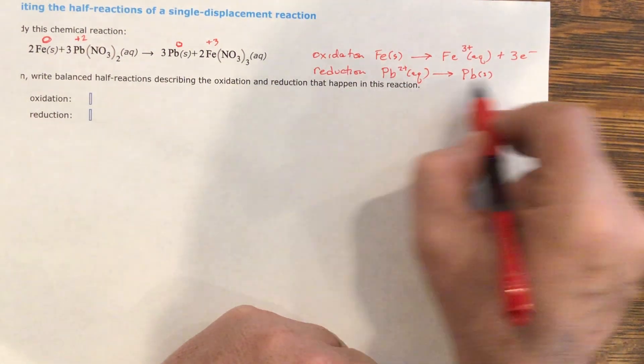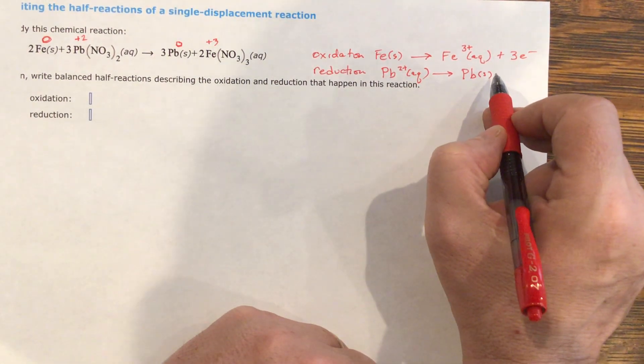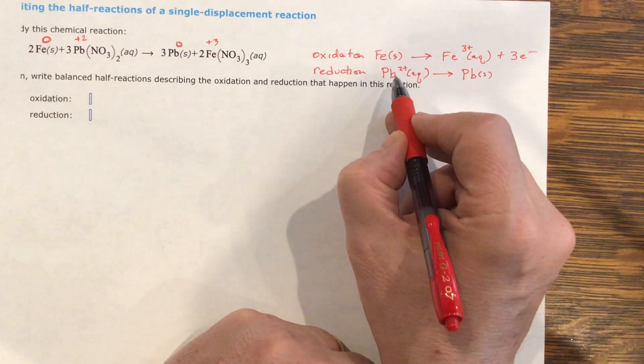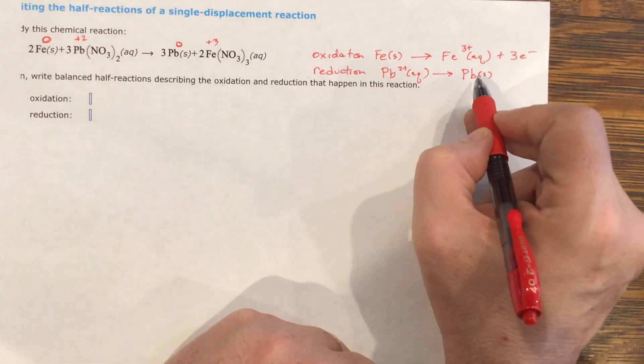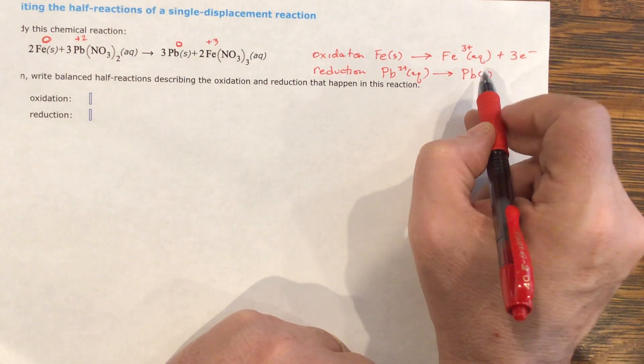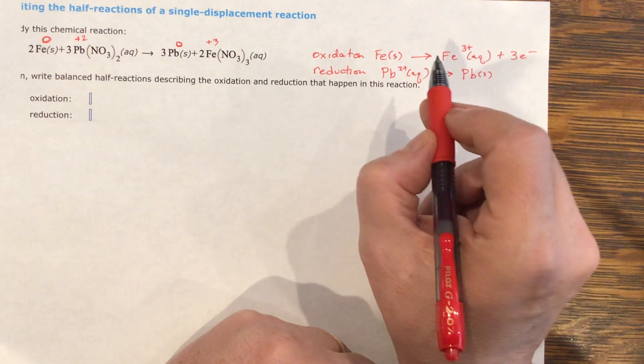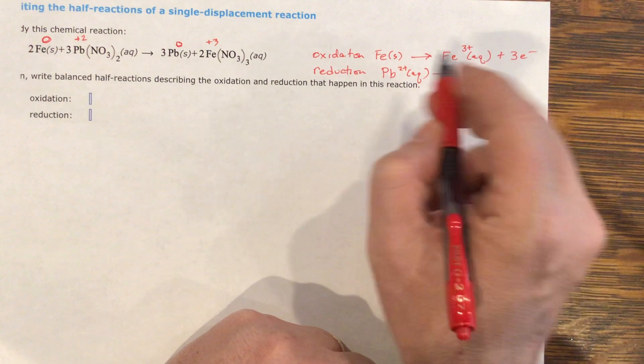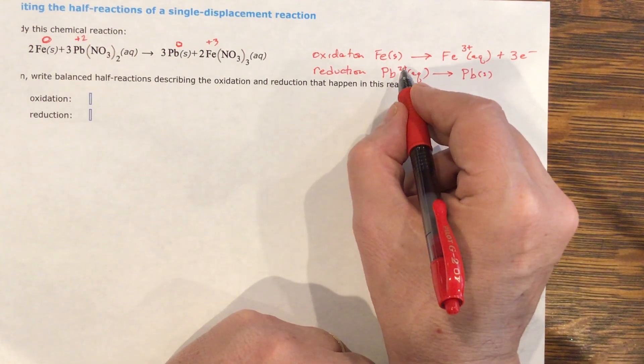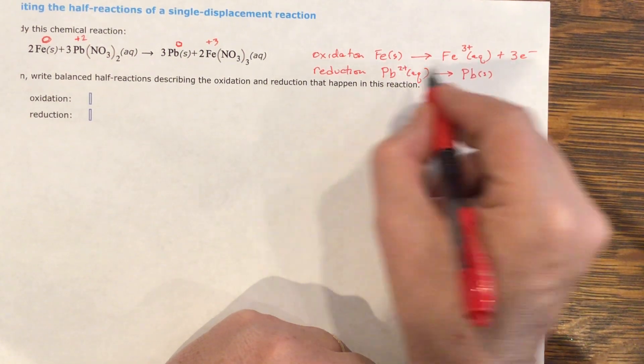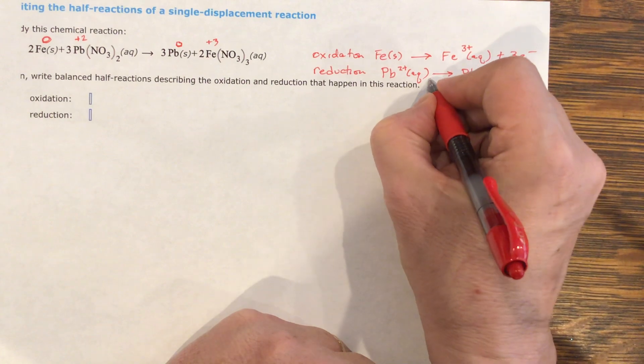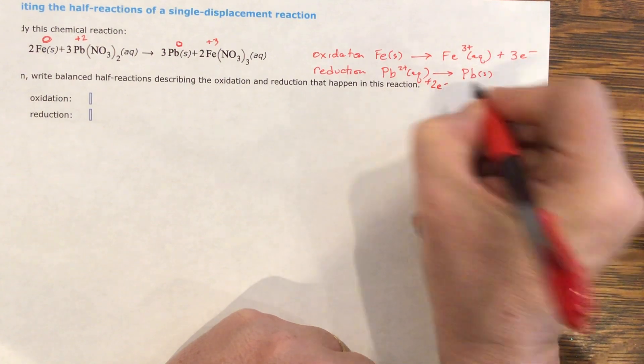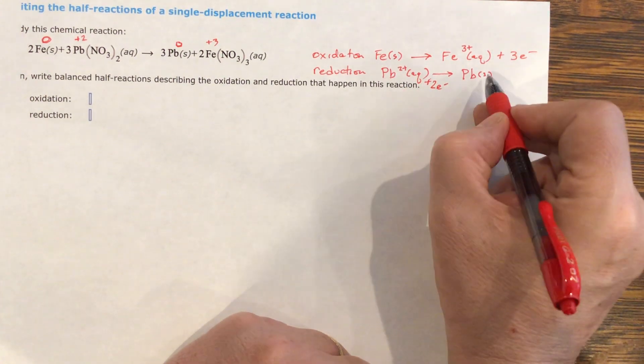The reduction side, how many electrons were transferred? I went from positive two to zero. So how do I make them both zero? I add electrons to the positive side so that I can cancel it. How many electrons were transferred? Two positive went down to zero, so I need two electrons on this side in order to make it.